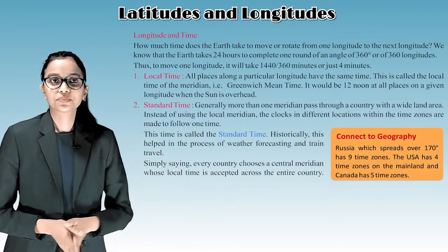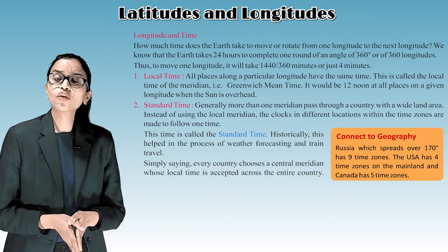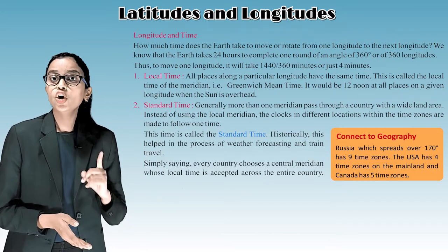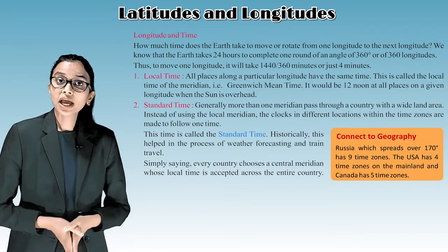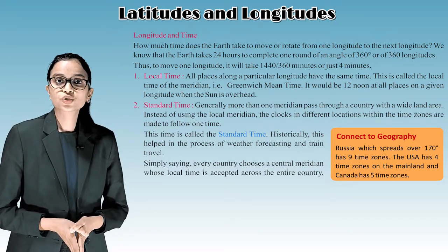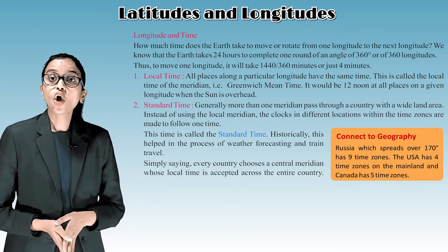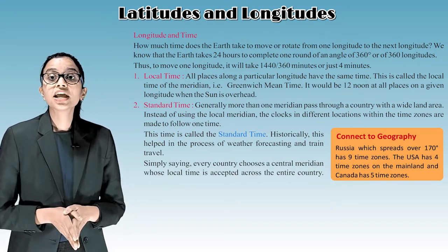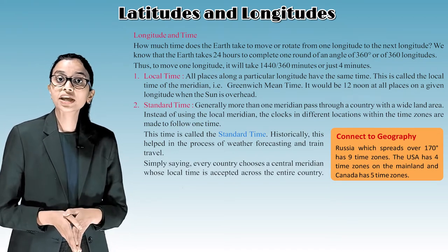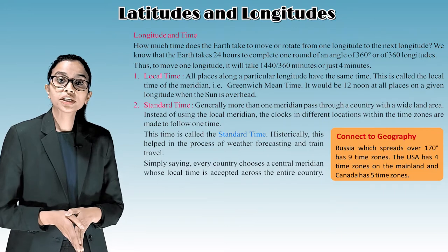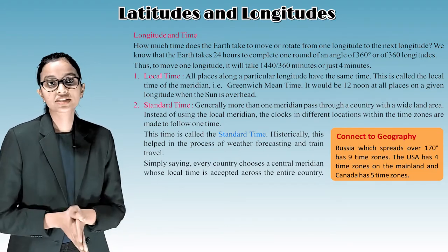Longitude and time: How much time does the earth take to move or rotate from one longitude to the next? We know that the earth takes 24 hours to complete one round of 360 degrees or 360 longitudes. Thus, to move one longitude, it takes 4 minutes.